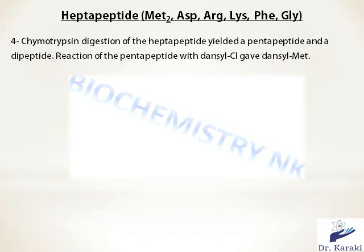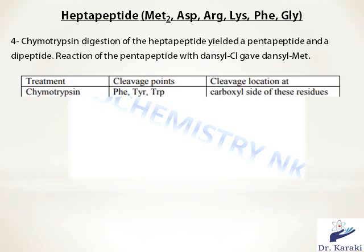Next, the heptapeptide is subjected to chymotrypsin digestion, yielding a pentapeptide and a dipeptide. The reaction of the pentapeptide with dansyl chloride gave dansyl-methionine. Chymotrypsin is an endopeptidase that cleaves a peptide bond after, or on the carboxyl end of, phenylalanine, tyrosine, and tryptophan. In this exercise it will cleave after phenylalanine, provided the next amino acid is not proline.